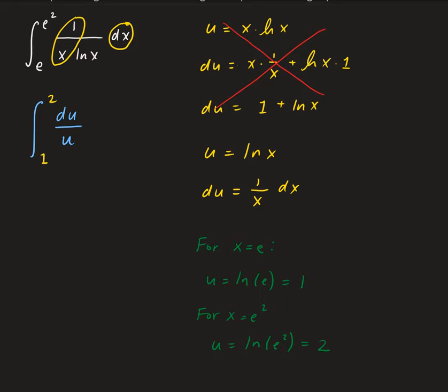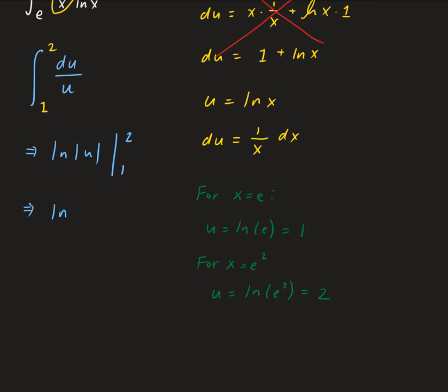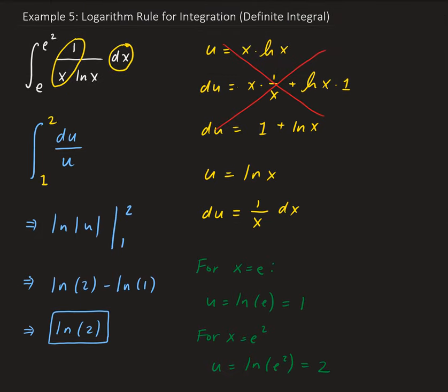The integral of 1 over u du gives us natural log u, evaluated from 1 to 2. This gives us natural log 2 minus natural log 1, and since natural log 1 is 0, we end up with natural log of 2. So this is the solution: we tried u as the denominator, it didn't work, so we chose u to be natural log x, which gave us the form 1 over u du, converted the limits of integration, and arrived at the value of natural log 2.